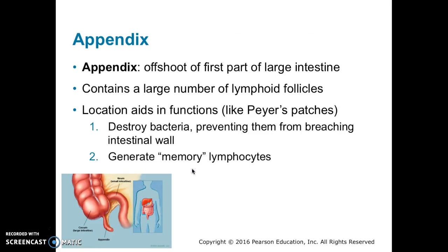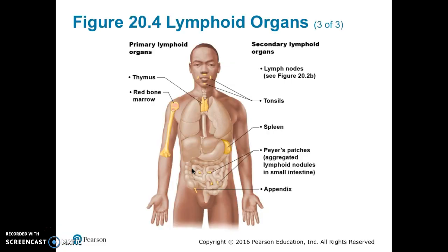Next we come to the appendix. The appendix is an offshoot of the first part of the large intestines. It contains a large number of lymphoid follicles. Its location aids in its ability to destroy bacteria and preventing them from breaching the intestinal wall and to generate memory lymphocytes. Here we see the appendix location in the body, right off of the large intestines.